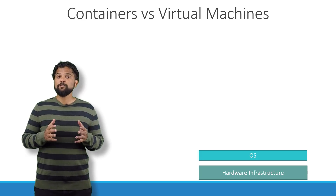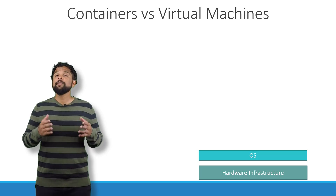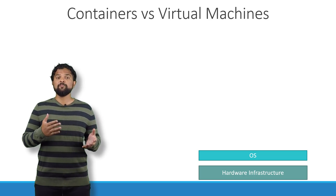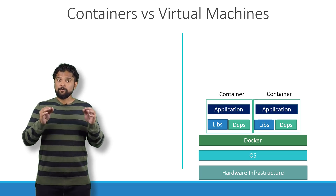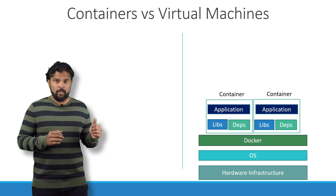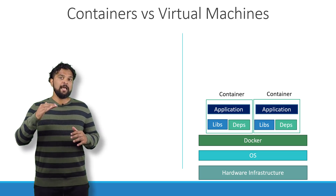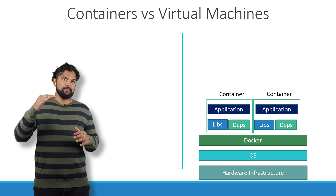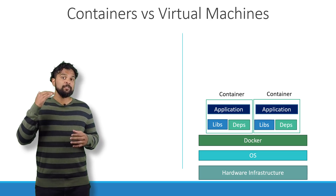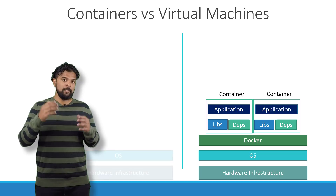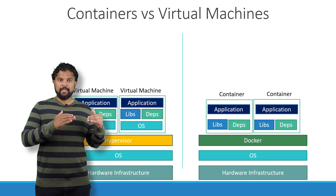So that brings us to the differences between virtual machines and containers. As you can see, in case of Docker, we have the underlying hardware infrastructure, then the operating system and Docker installed on the OS. Docker can then manage the containers that run with libraries and dependencies alone.